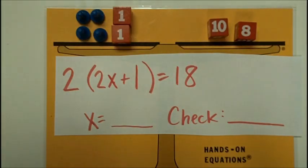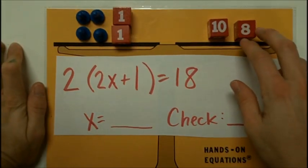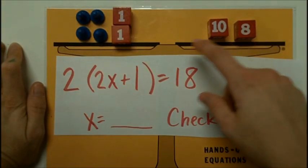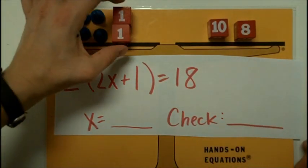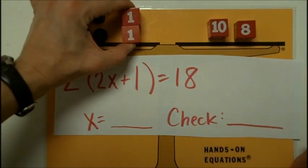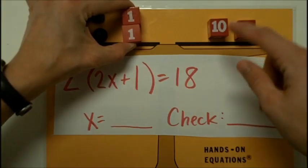Now I can use a legal move to remove the same amount from both sides. So I'm going to remove a 2. This 1 plus 1 is 2. I'm going to remove 2 from both sides.